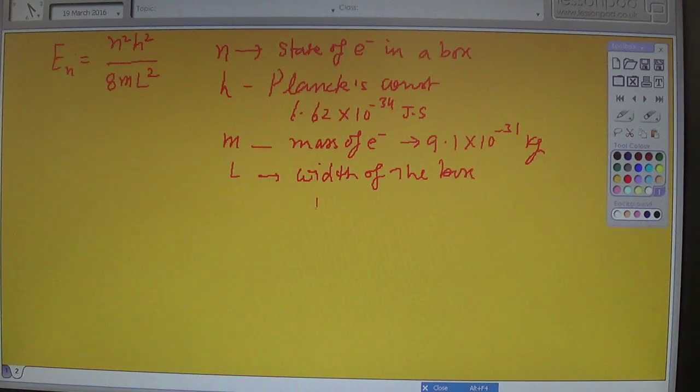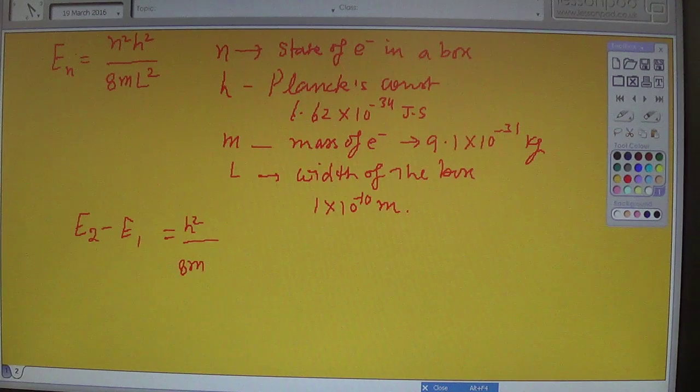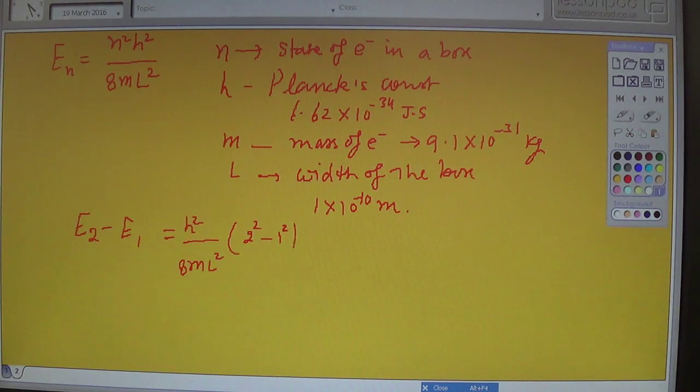L is the length or width of the well, that is given as 1 times 10 raised power minus 10 meters. We have to find out the difference between E2 and E1. If we put the value of n only and keep h square 8 m L square outside, this is 2 square minus 1 square, and that equals 3. Now putting the value of these constants.